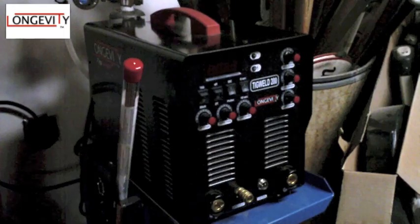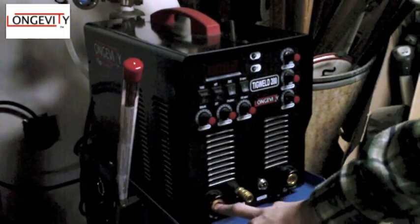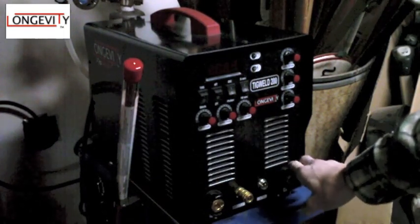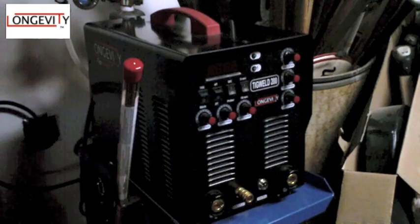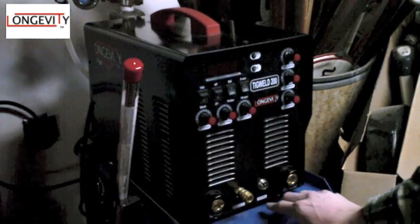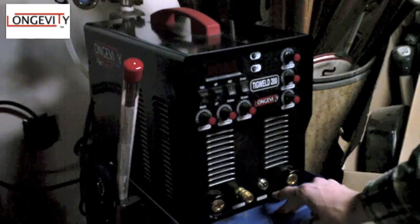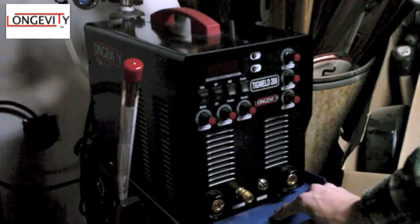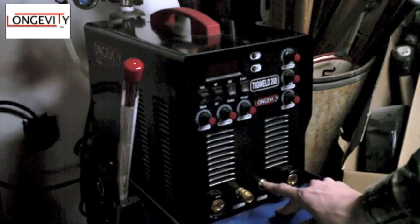First you'll see the two main negative and positive ports for the DIN connectors. Then you're going to see a gas outlet that's a quick disconnect. Then you're going to see a control for the button on the TIG torch to start the arc, and that's a two-pin connector.